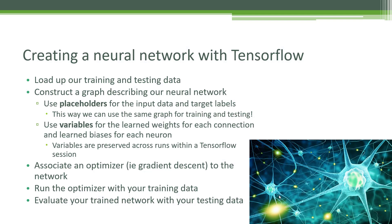We're going to construct a graph just like we did before, and we're going to introduce a new concept called a placeholder. A placeholder is just a way of having a placeholder within your graph for various data. By using placeholders, we can use the same graph structure for both our training and for our testing, and for actually applying our neural network in the future. We can use the same placeholder for our input values, feed in our training data, and do gradient descent on the resulting network.